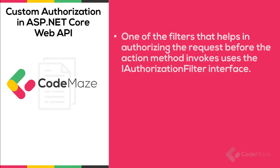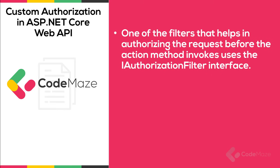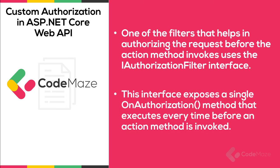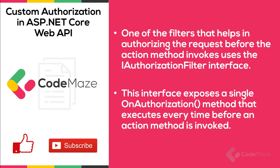ASP.NET Core provides filters to execute user-defined code before or after an action method. One of those filters that helps in authorizing the request before the action method invokes uses the IAuthorizationFilter interface. This interface exposes a single onAuthorization method that executes every time before an action method is invoked.